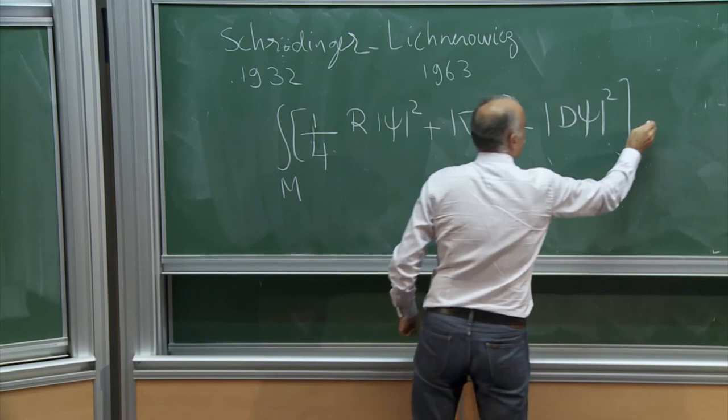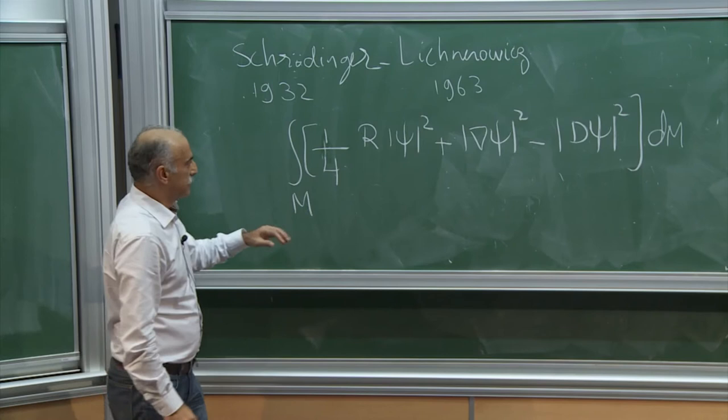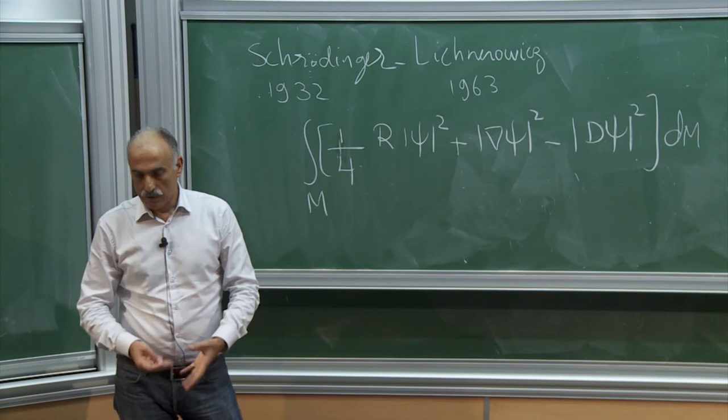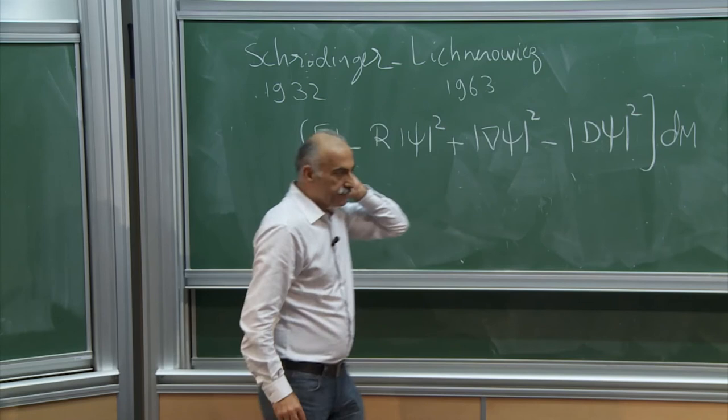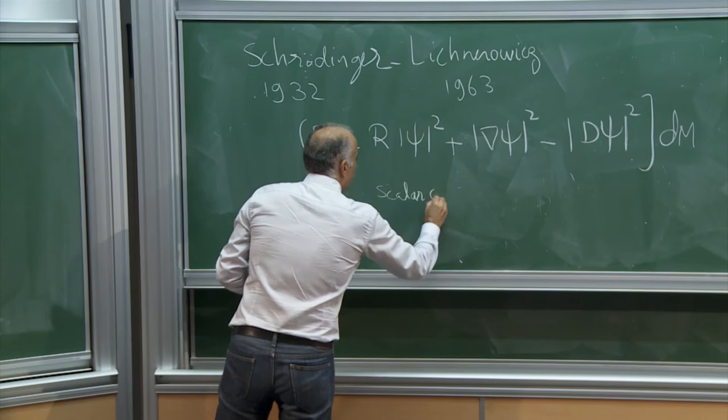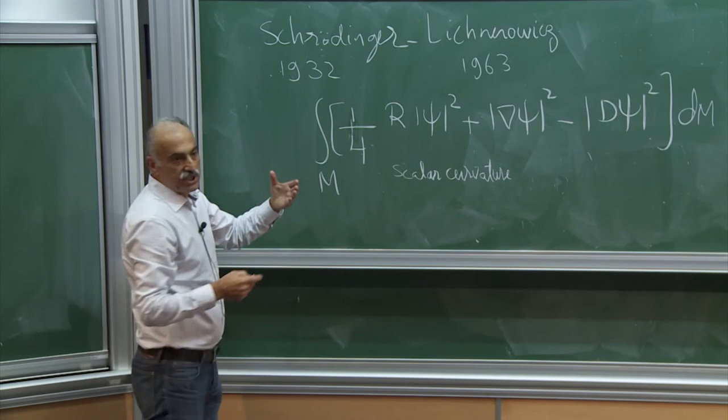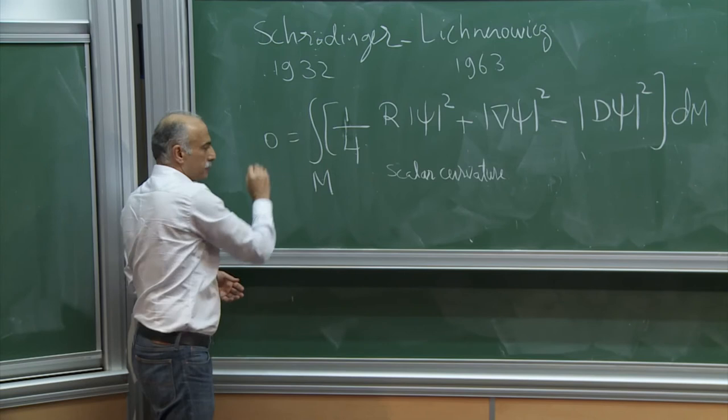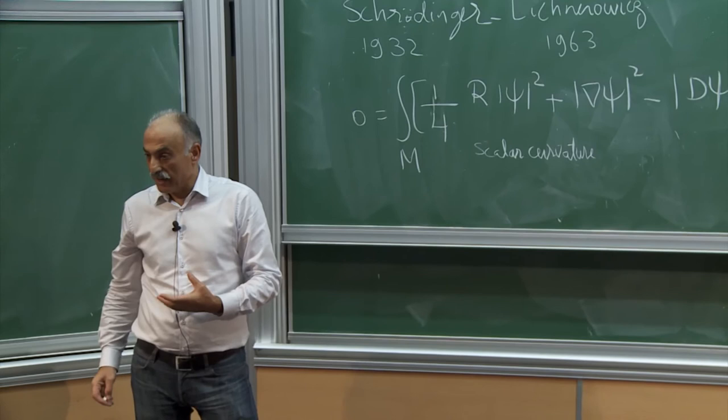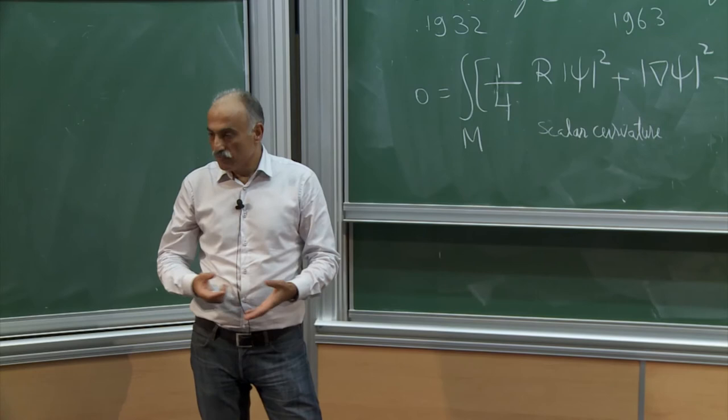So what are these objects? This is the standard Levi-Civita connection, which is coming from the Riemannian manifold, and D is the Dirac operator. R is the scalar curvature, which was S in the talk this morning. So the Schrödinger-Lichnerowicz formula, if we take a manifold, the compact manifold without boundary, this is zero. Schrödinger actually wrote this? Schrödinger wrote a paper in 32, in fact, he worked locally, and he found this formula. He said, this is a beautiful formula, but he was not able to conclude that.